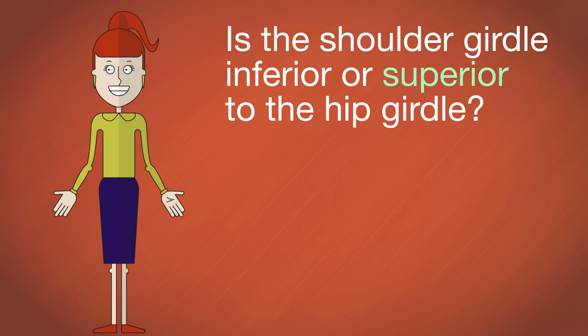Let's try one more. Is the shoulder girdle inferior or superior to the hip girdle? Correct. It's superior to the hip girdle because the shoulder girdle is above the hip girdle.